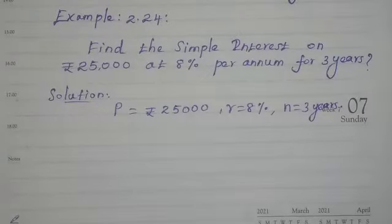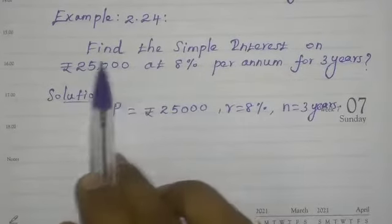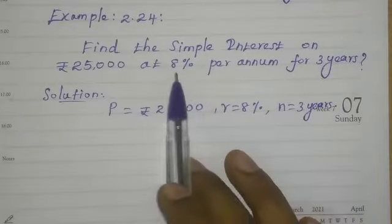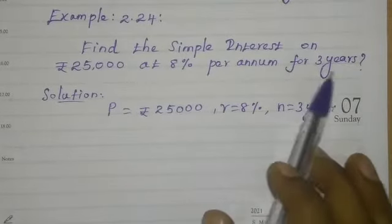Hello students, let's see example 2.24. Find the simple interest on rupees 25,000 at 8% per annum for 3 years.